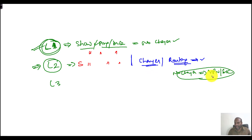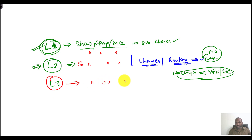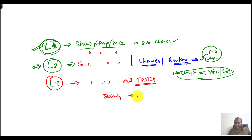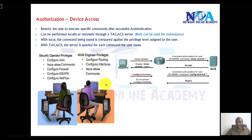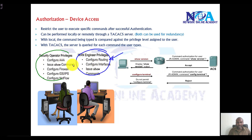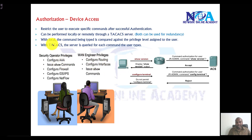Level two engineers also cannot erase any configurations. Likewise, level three engineers can do almost all tasks from A to Z except a few. We also have a security group of engineers whose responsibility is to make changes to VPNs and ACLs, and they can modify some policies, but they cannot make changes to routing configurations.